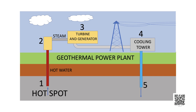Geothermal energy — 'geo' means earth and 'thermal' means heat. Due to geological changes, molten rocks formed in the deeper hot regions of Earth's crust are pushed upwards and trapped in certain regions called hot spots. When underground water comes in contact with a hot spot, steam is generated.